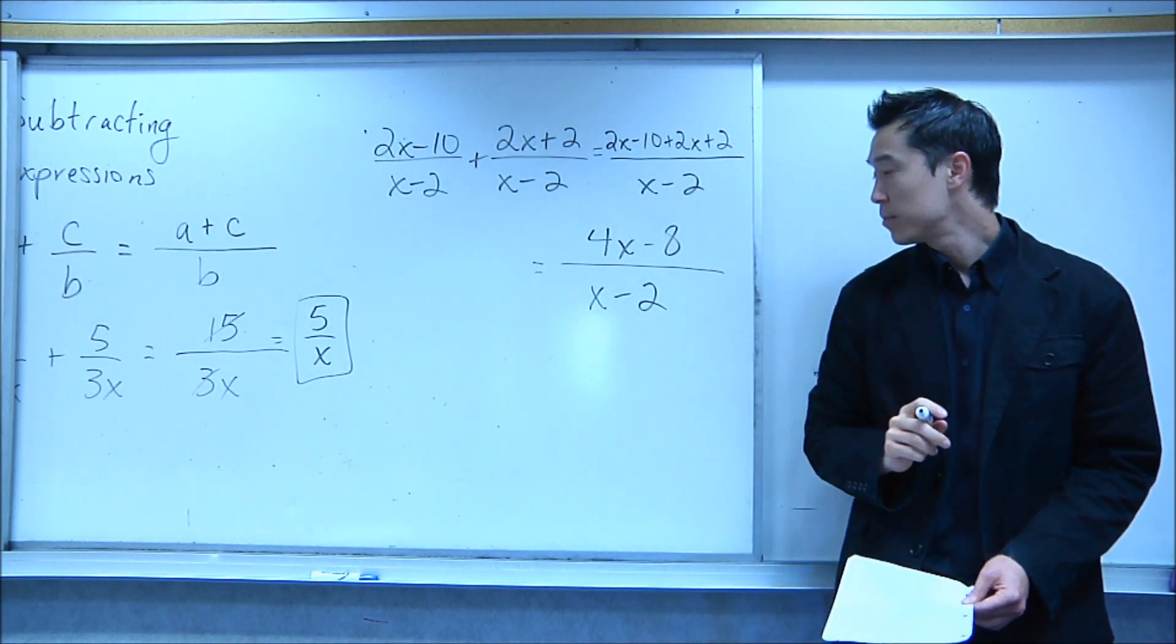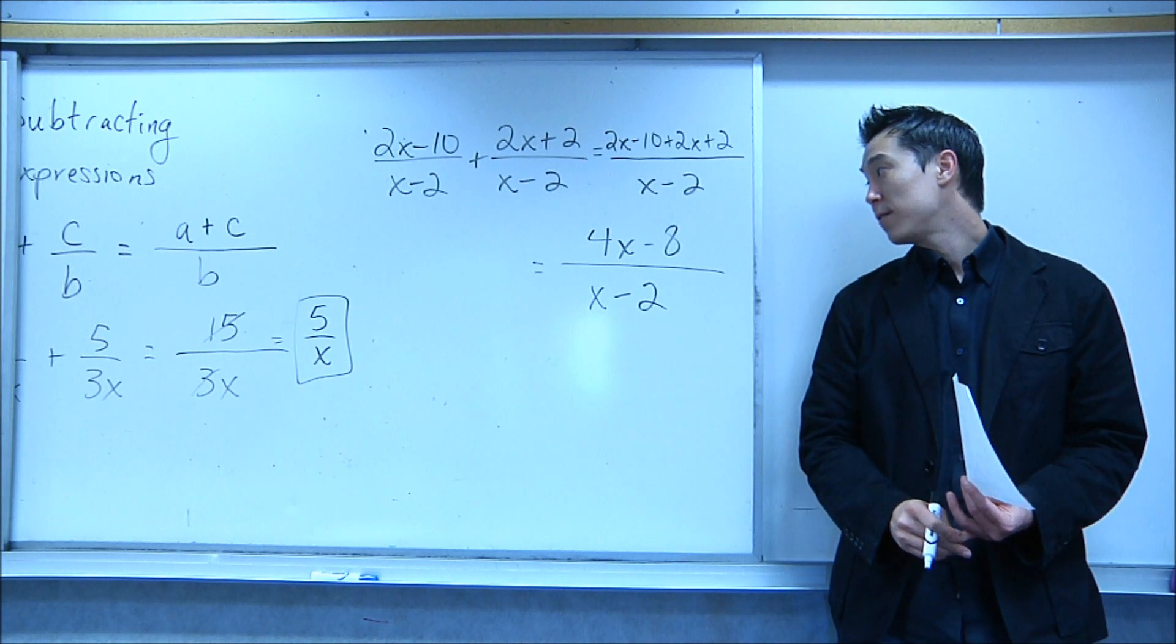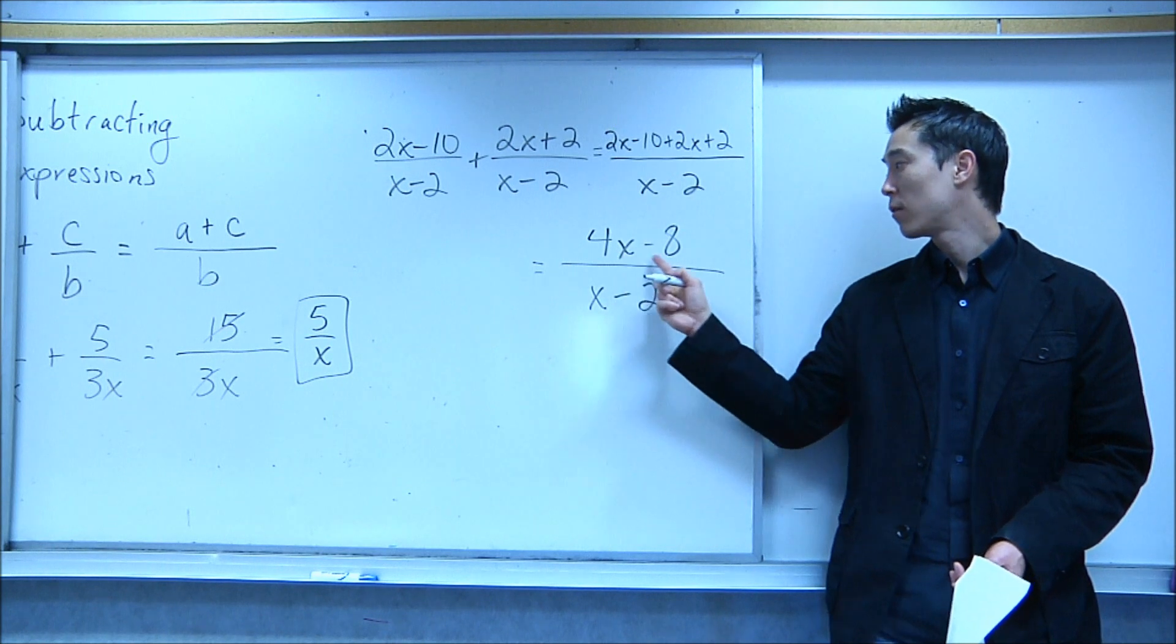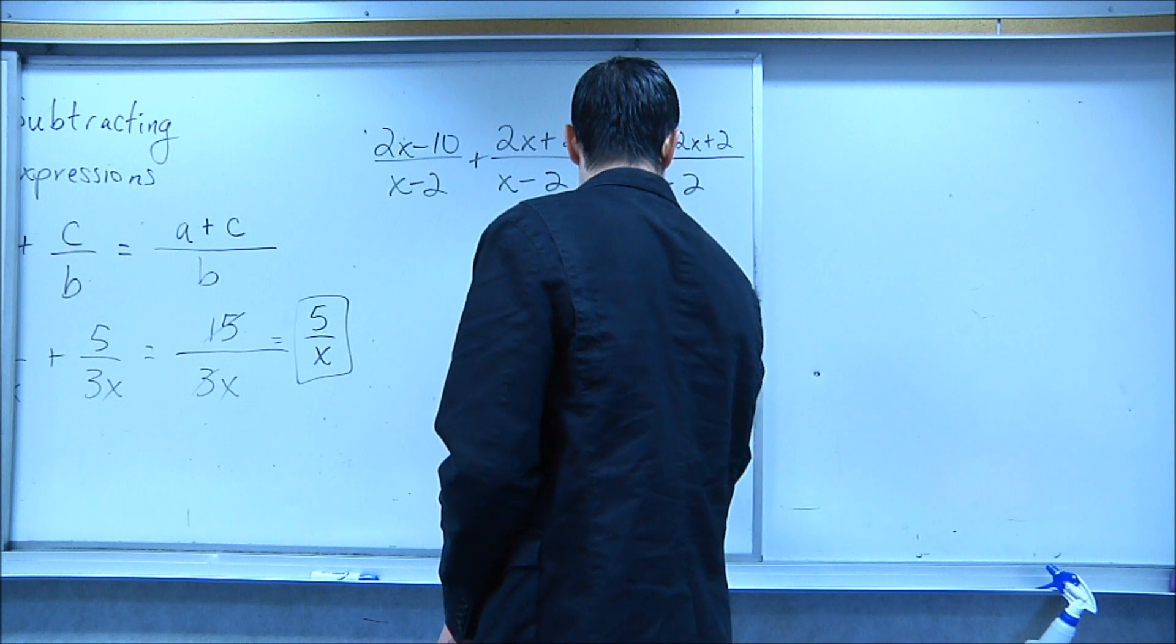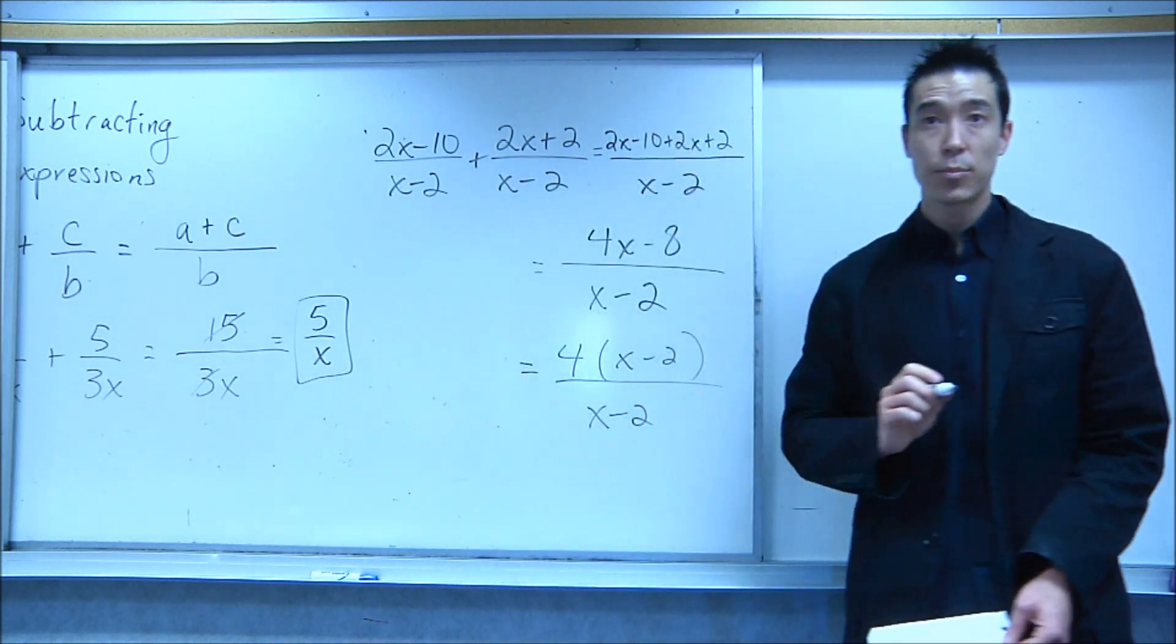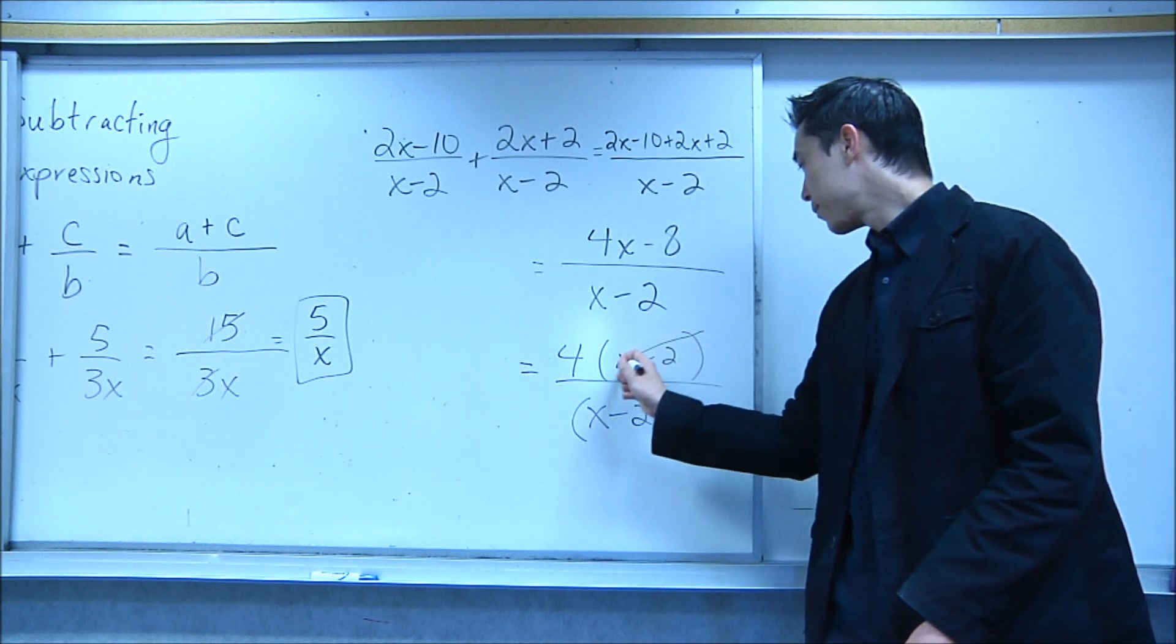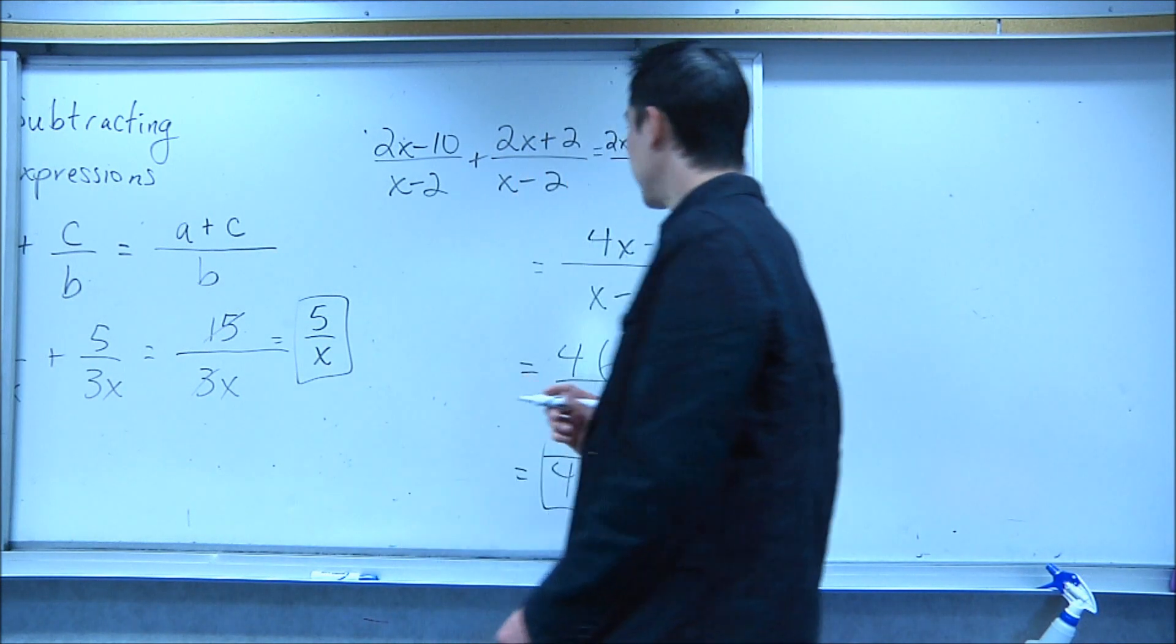Alright. So now I'm at this point in the problem. I've combined my like terms in the numerator. Can anything be factored out of either of these? Up here, can I factor anything out? GCF would be 4. Right. So let's take a 4 out. And what goes in parentheses? X minus 2. Isn't that nice? So I have 4 parentheses x minus 2 divided by x minus 2. Let's go ahead and put that in parentheses. And I can reduce that whole thing. So my final answer for this problem is just 4.